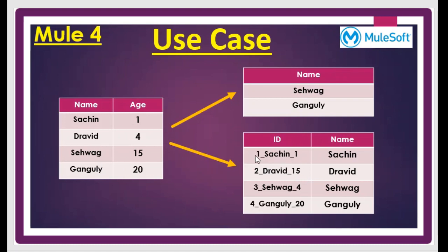We are going to prepare the ID based on the index sequence number, the name, and the age — concatenating them to form a unique value. That unique value acts as the key, and the name will be used as-is to form the value. So in summary, we get a collection of employee details, prepare a list using an age selection criteria of 5 and above, and prepare a map by iterating all entries using for-each and constructing an employee ID as index underscore name underscore age.